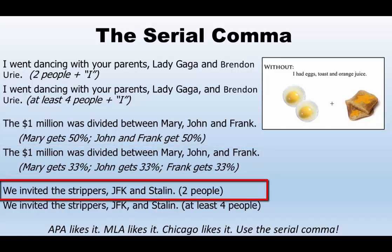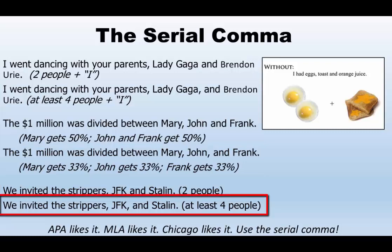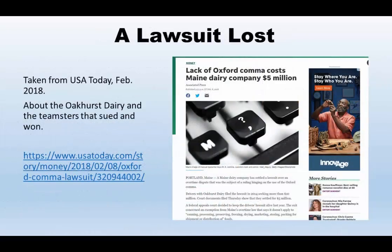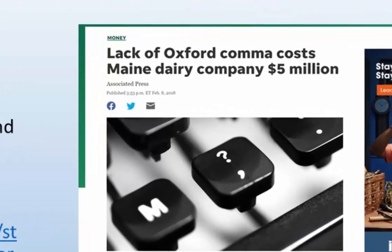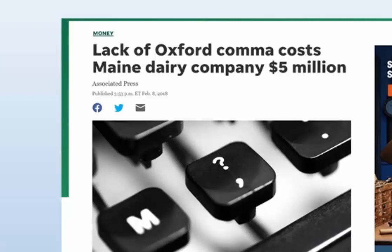'We invited the strippers, JFK and Stalin.' Here, there are two strippers and their names are JFK and Stalin. But with the serial comma: 'We invited the strippers, JFK, and Stalin' — we don't know how many strippers there are, but JFK and Stalin are distinct from the strippers. I promised earlier that you can win or lose a court case based on punctuation. There was a real lawsuit with a dairy company in 2018. They were forced to settle because the agreement lacked the serial comma, also called the Oxford comma. The meaning of a labor contract was altered — five million dollars for want of a comma.